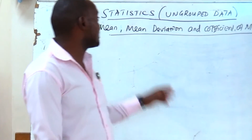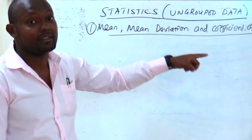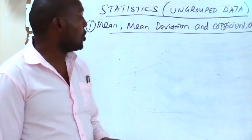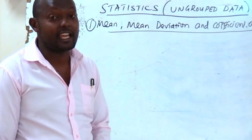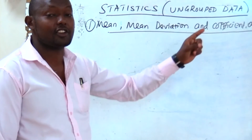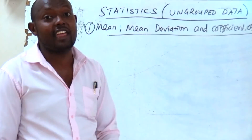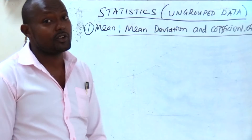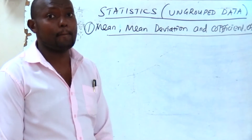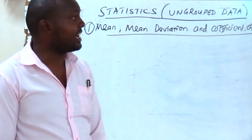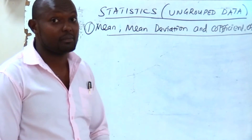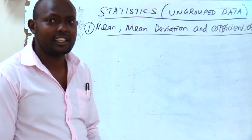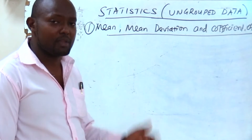In this first class, we shall look at statistics of ungrouped data where we shall look at mean. We shall calculate mean, then mean deviation, and the coefficient of mean deviation. Under mean, we shall look at various methods: arithmetic mean, geometric mean, and harmonic mean.